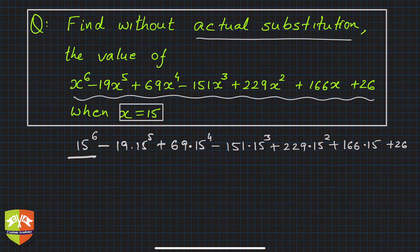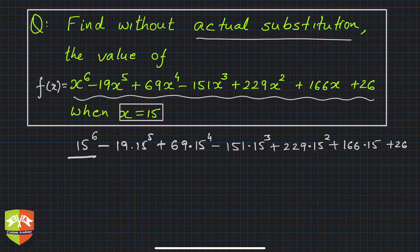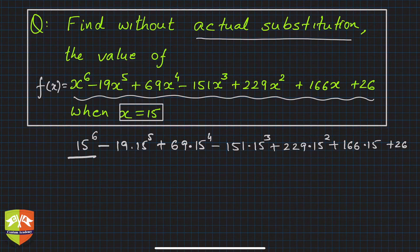We'll try to take some factors out of this polynomial. Let's call this polynomial f(x). We want to take out the linear factor x minus 15. We'll divide the entire f(x) by x minus 15 and find out the remainder. The remainder will be nothing but the value of the function f(x) - just put the value x there and that gives you the value of the polynomial f(x).